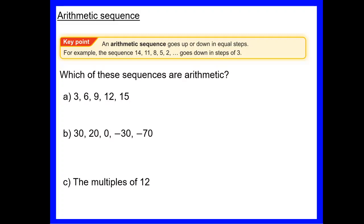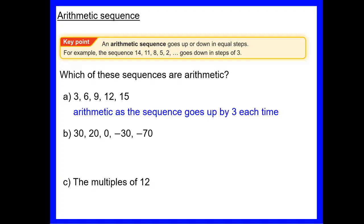Let's look at some sequences and decide if they are arithmetic. Our first one: 3, 6, 9, 12, 15. From 3 to 6 we've added 3, from 6 to 9 we've added 3, then we add 3 again and again. That one is arithmetic as it goes up by 3 each time — each jump from one number to the next is exactly the same.